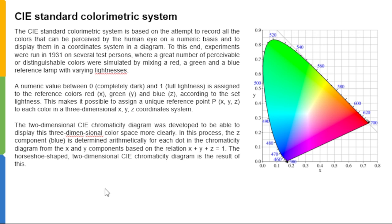CIE standard colorimetric system is based on the attempt to record all colors perceivable by the human eye on a numeric basis and display them in a coordinate system. In 1931, experiments were run on several test persons where a great number of perceivable colors were simulated by mixing a red, green, and blue reference lamp with varying lightness. A numeric value between zero (completely dark) and one (full lightness) is assigned to reference colors red X, green Y, and blue Z, making it possible to assign a unique reference point P(X,Y,Z) to each color in a three-dimensional coordinate system.